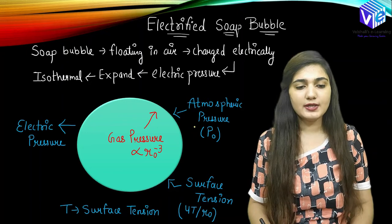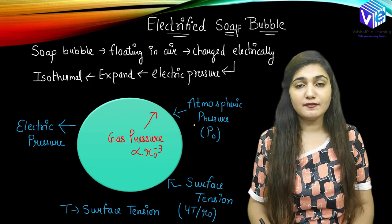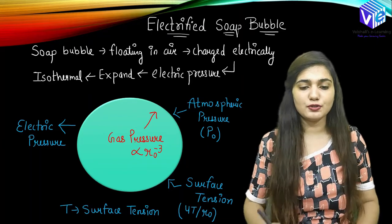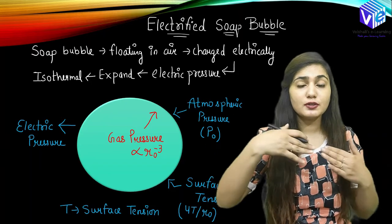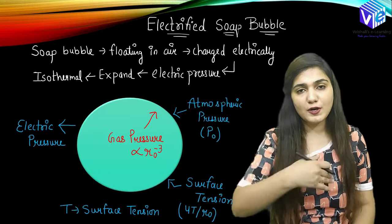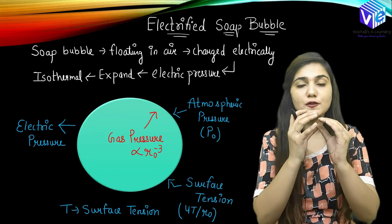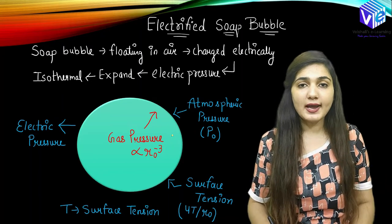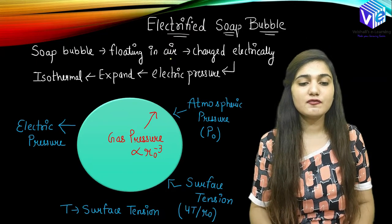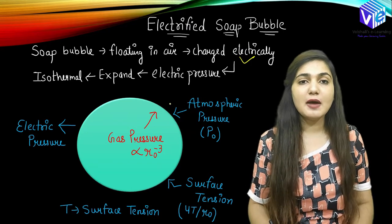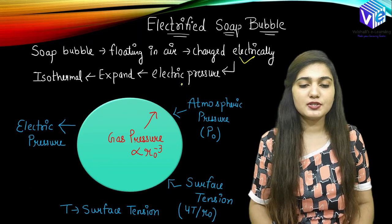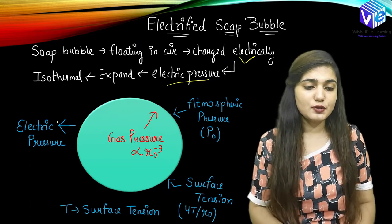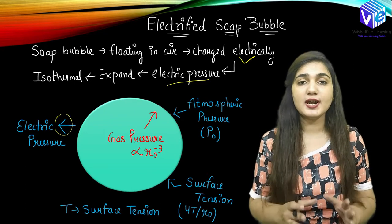Now, coming to the electrified soap bubble. In the soap bubble we have various pressures. From inside, we have the gas pressure going towards the outside. From outside, we have the atmospheric pressure trying to compress the soap bubble, so it is towards the inside. Then we have surface tension, which is also going to make the soap bubble as small as possible — so it's also an inside pressure. Now, if we provide electronic charges on this soap bubble floating in air, we will have one more pressure: the electric pressure, which acts in the outward direction and will try to expand the soap bubble.